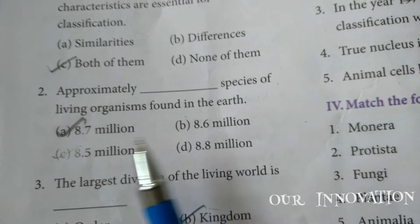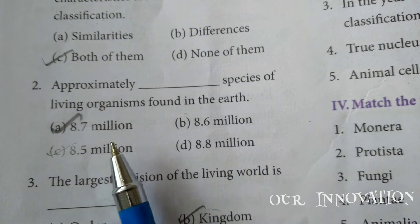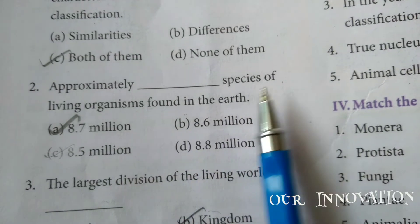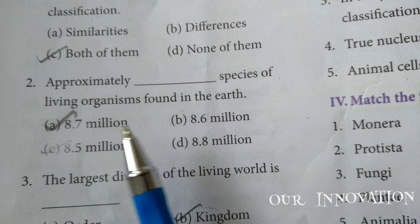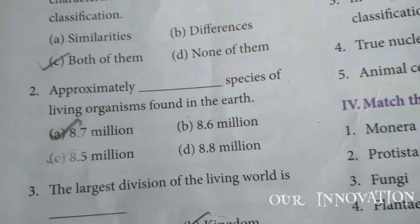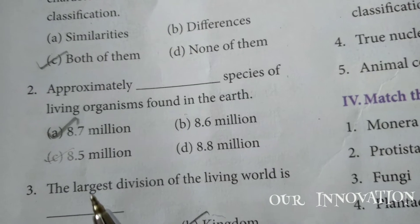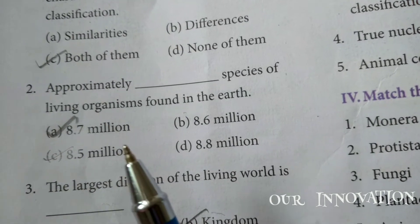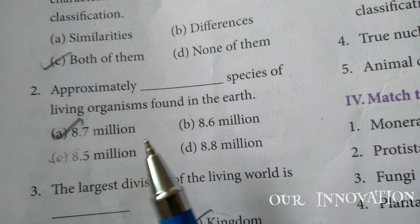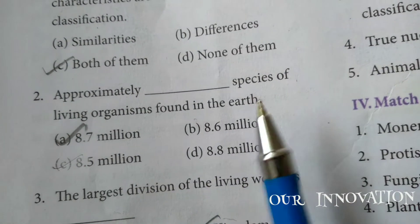Second question: approximately how many million species of living organisms are found on Earth? The answer is 8.7 million species.